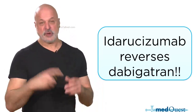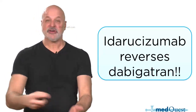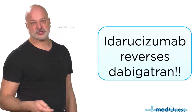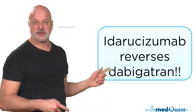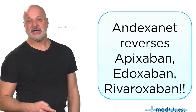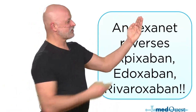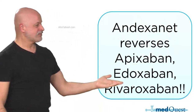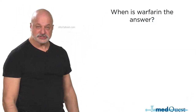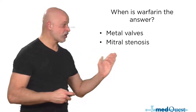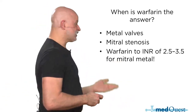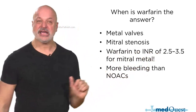Warfarin is the answer for metal valves and mitral stenosis, where you maintain a really high INR, but that also means an even greater risk of bleeding. If you have bleeding from warfarin with a really high INR, the therapy to reverse warfarin is PCC — Prothrombin Complex Concentrate — which provides factors 2, 7, 9, and 10, as well as protein C and protein S.